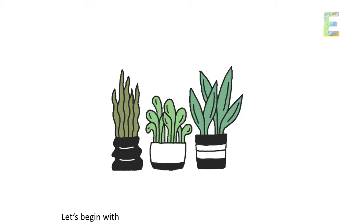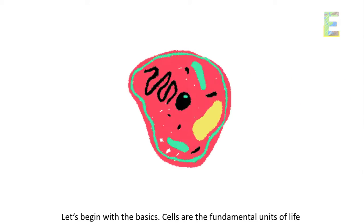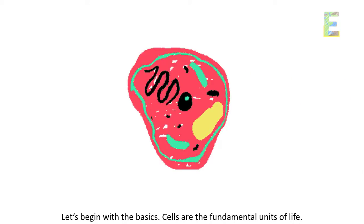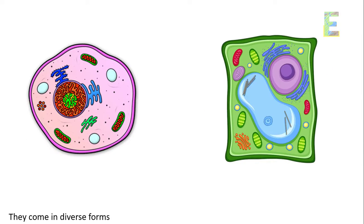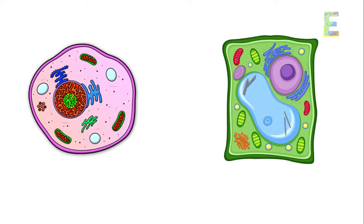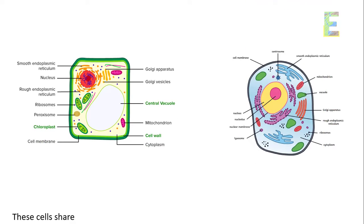Introduction to cells. Let's begin with the basics. Cells are the fundamental units of life. They come in diverse forms, but two of the most well-known types are animal and plant cells. These cells share core features, yet they also have distinct characteristics that set them apart.